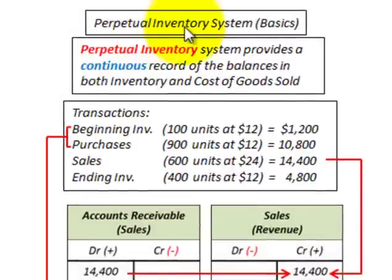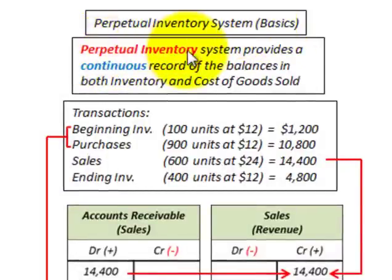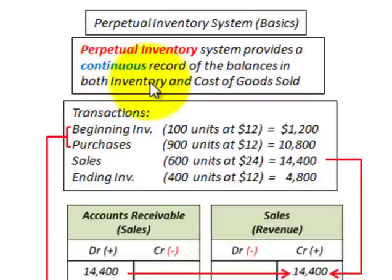Here we're going to be looking at a perpetual inventory system — just the basics. So what is a perpetual inventory system? It provides a continuous record of the balances in both the inventory account and the cost of goods sold account.